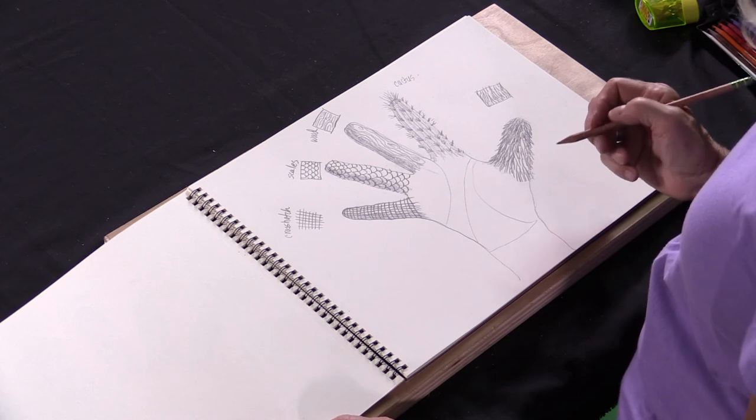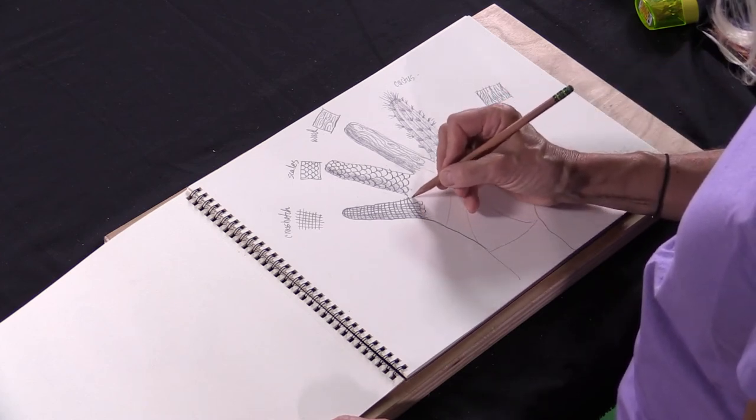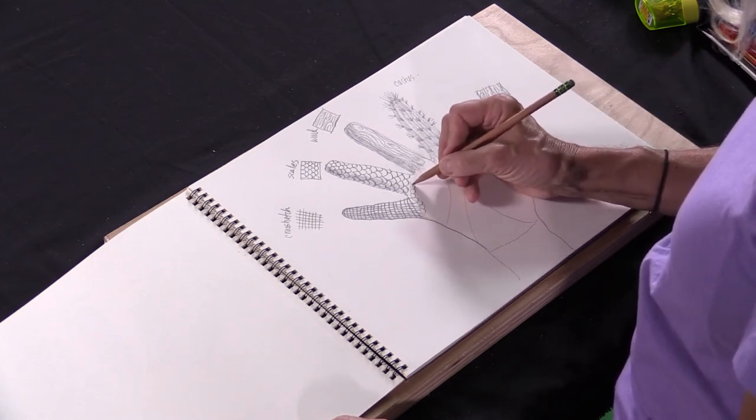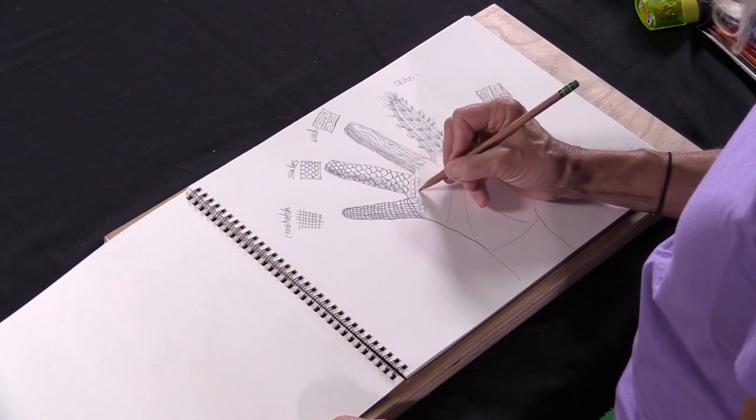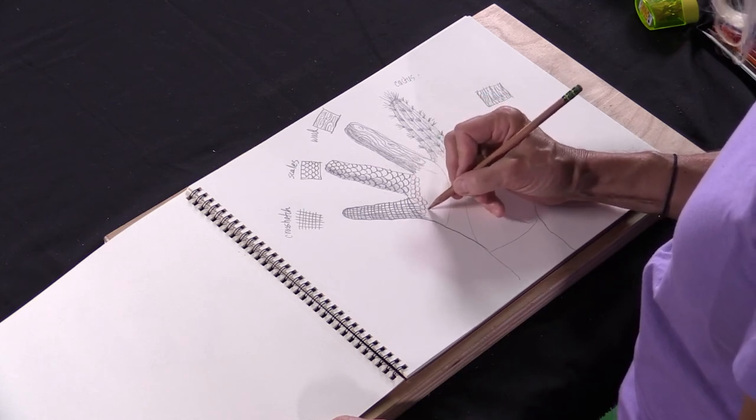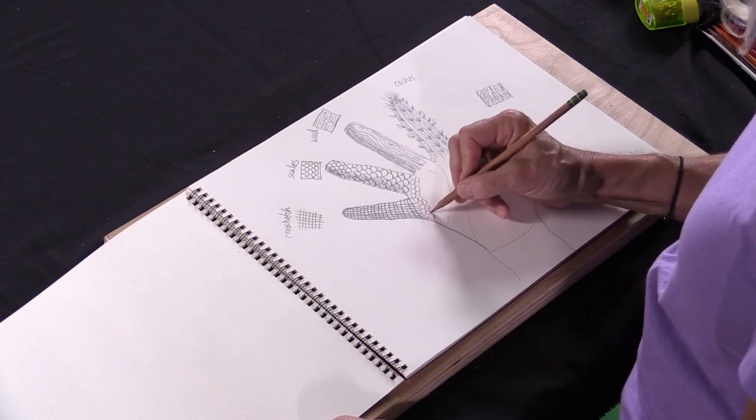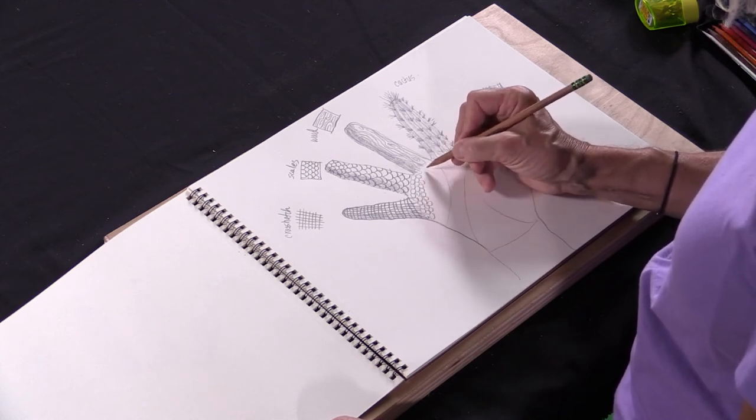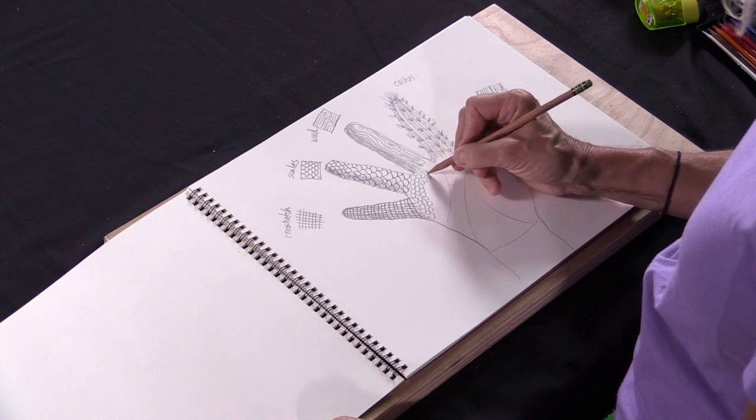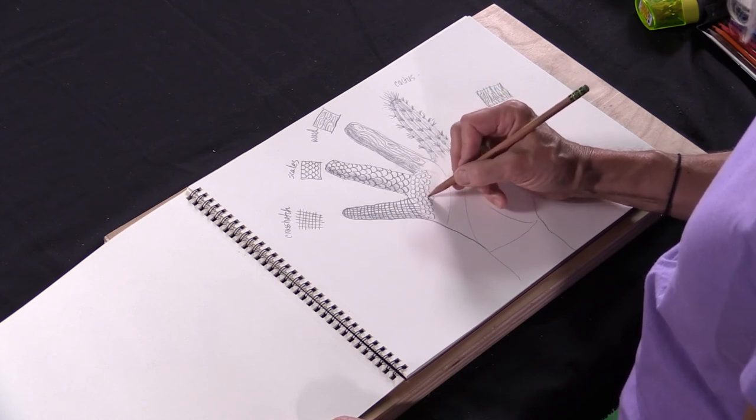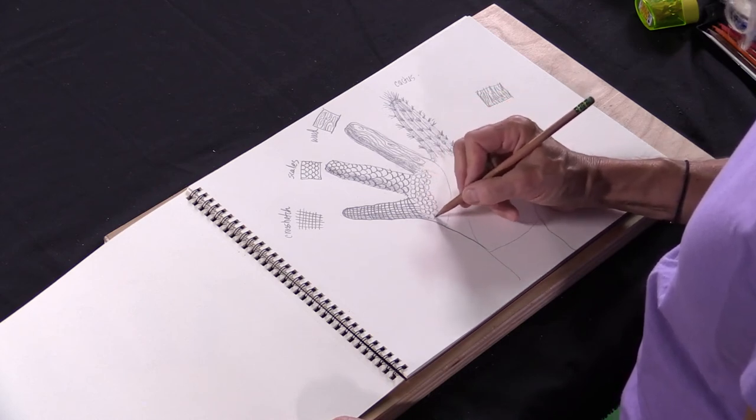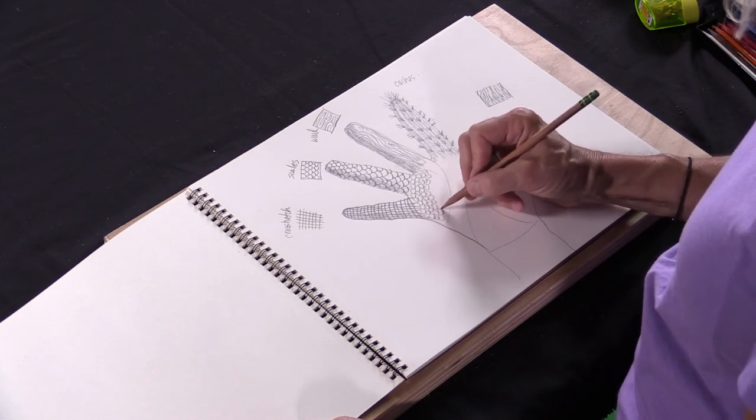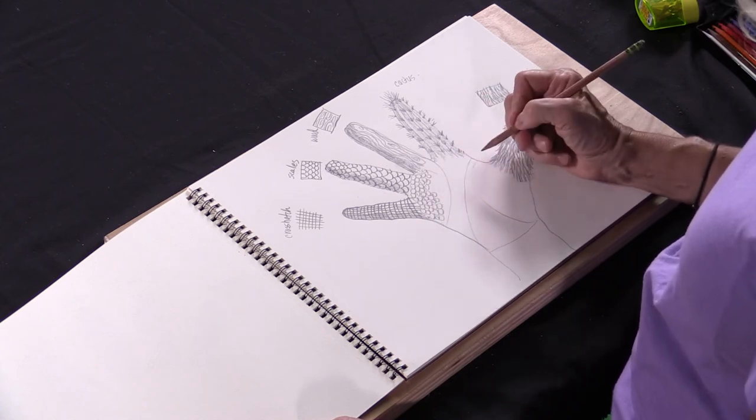For example, maybe I want to make bubbles or circles in here. So you could fill each area of your hand with as many textures as you can find. You could go back and look at that slide earlier for some more examples.